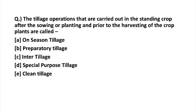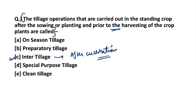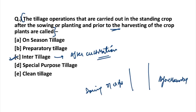Moving to the next question: tillage operations that are carried out in a standing crop after sowing or planting and prior to the harvesting of the crop plants — what are these called? This method is known as inter tillage, also called after cultivation tillage. In simple terms, tillage is carried out after sowing of the crops and before harvesting. The period between sowing and harvesting — if tillage is done at that point, it is known as inter tillage or after cultivation tillage.